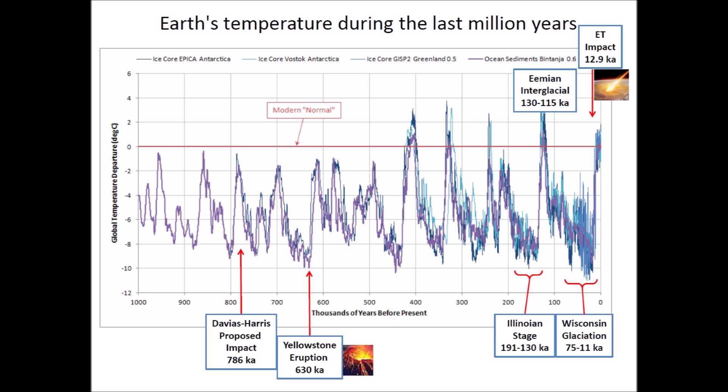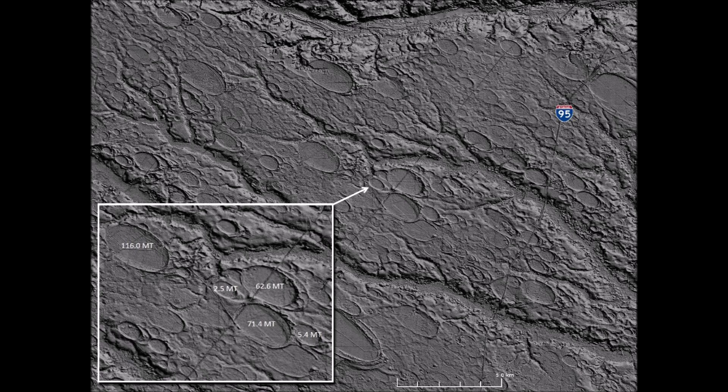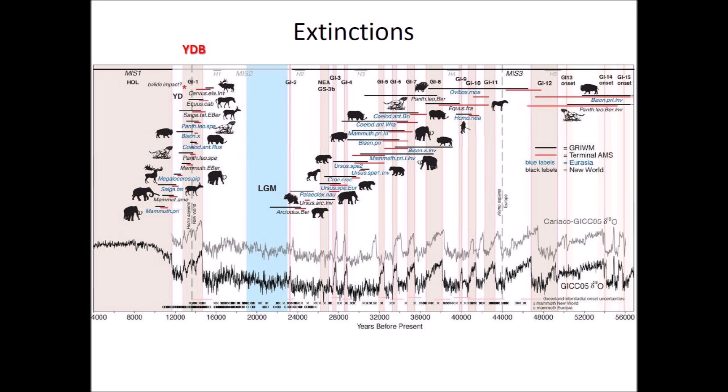The maximum ice extent occurred approximately 25,000 to 21,000 years ago during the last glacial maximum. The Eemian interglacial occurred from about 130,000 to 115,000 years ago, preceded by the Illinoian stage which lasted from 191,000 to 130,000 years ago; during the Illinoian stage, the Laurentide Ice Sheet covered about 85 percent of Illinois. The saturation bombardment that created the Carolina Bays would have killed all animals under the ejecta curtain. This graph shows extinctions during the last 56,000 years — the most severe extinction is at the onset of the Younger Dryas, 12,900 years ago.